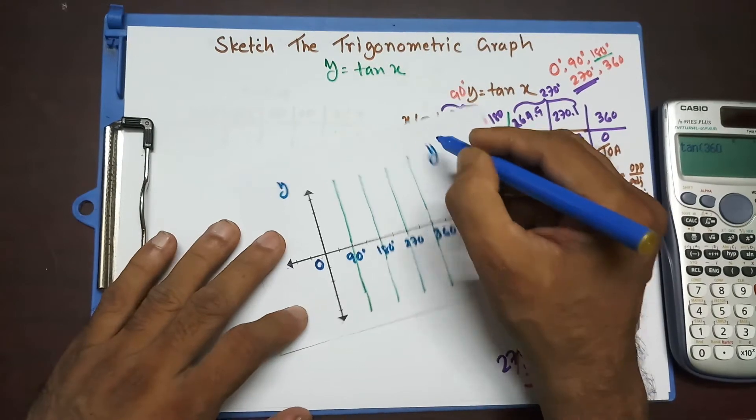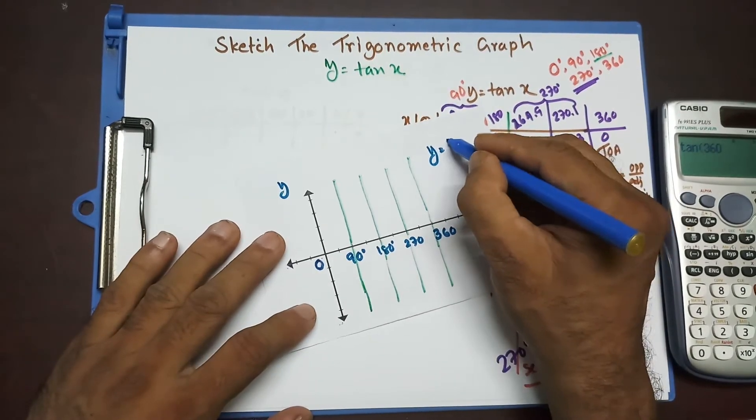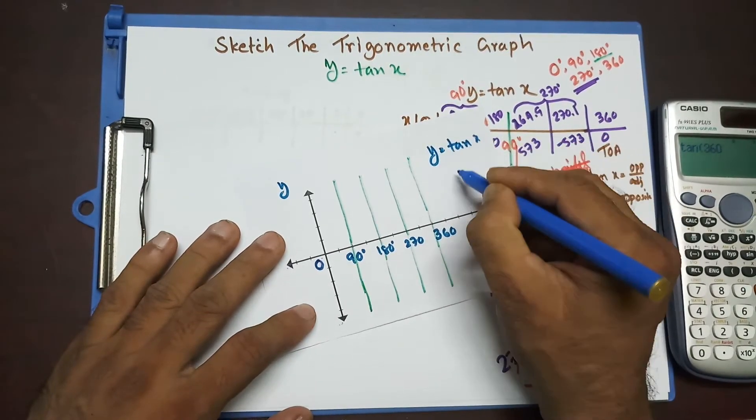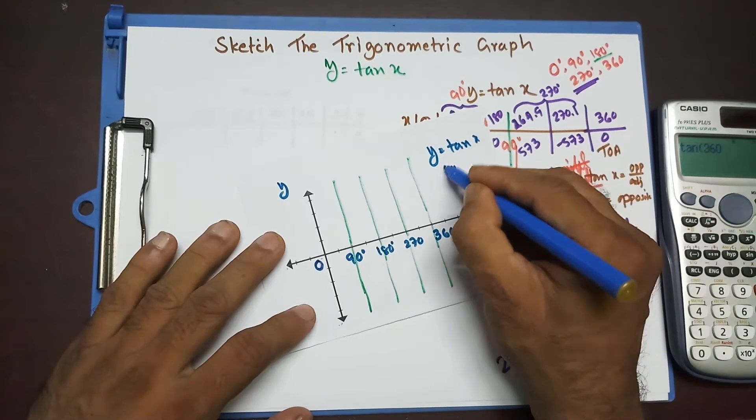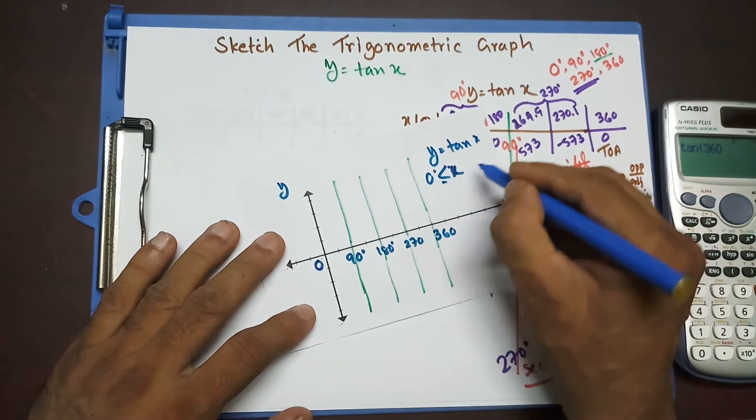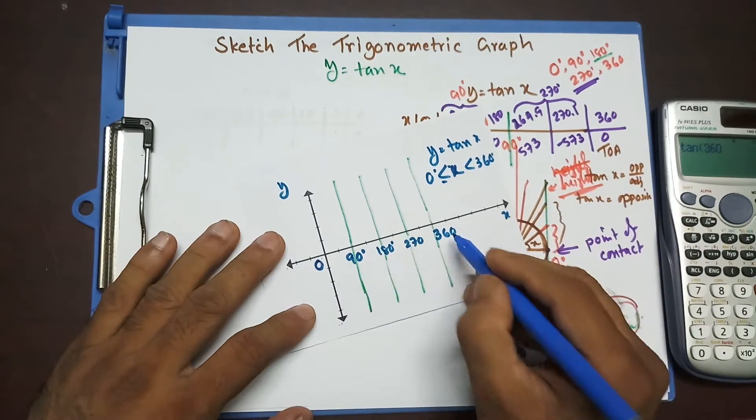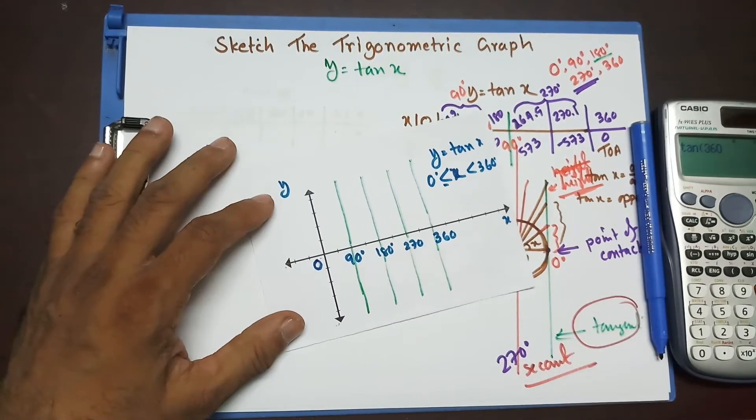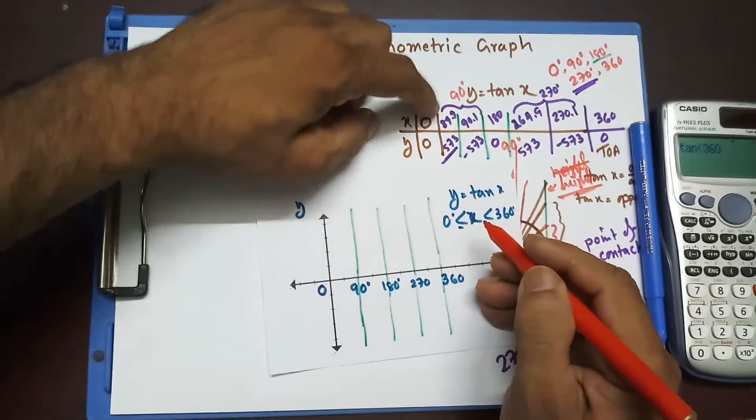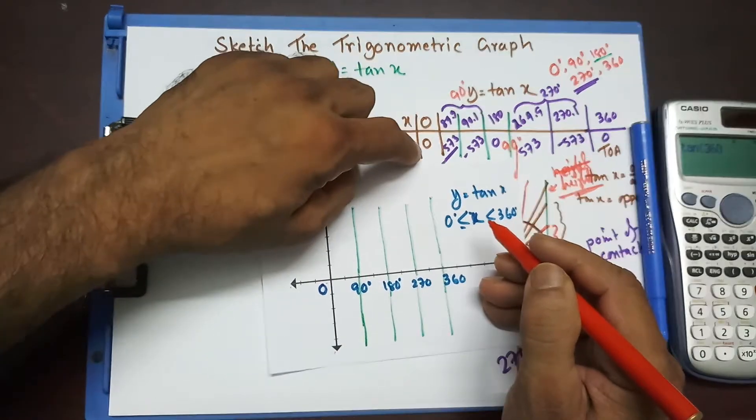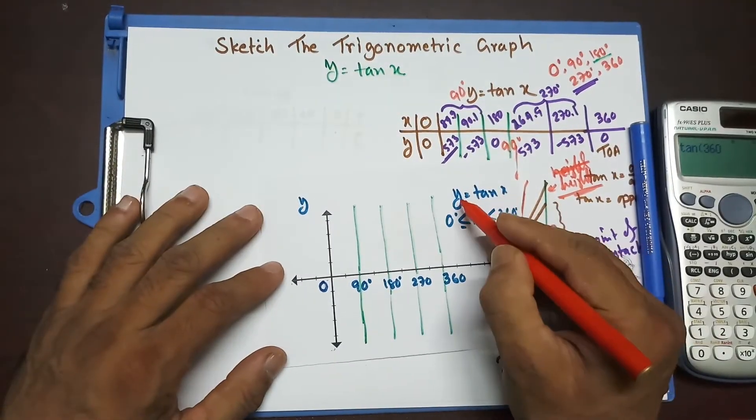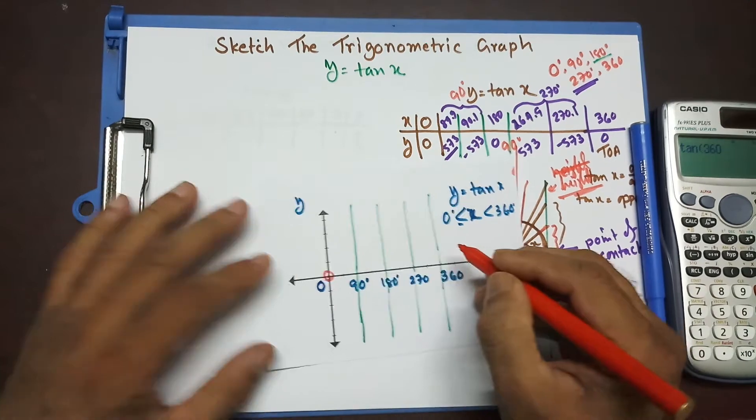And we are going to draw y equal to tan x from 0 degree to 360 degree. So, 0 to 360 degree, 5 important points. Now, at 0 degree, y is 0. When x is 0, y is 0. So, this is the point we are talking about.